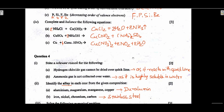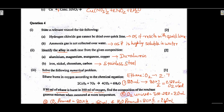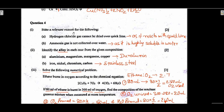Question 4: State relevant reasons. Hydrogen chloride gas cannot be dried over quicklime because HCl is acidic and quicklime is basic — they react with each other. Ammonia gas is not collected over water as it is highly soluble in water. Identify the alloy: alloy A gives duralumin and alloy B gives stainless steel.